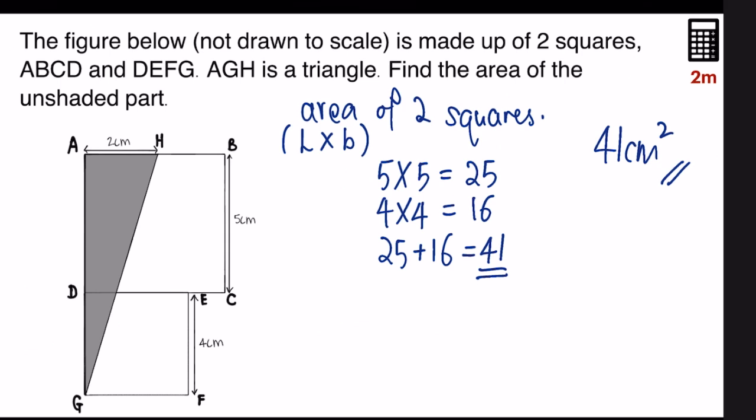Now back to the question. They want us to find the area of the unshaded part, which is right here. Since I have found the area of the two squares, I can simply take the area of the two squares and subtract the triangle and I'll get the unshaded part. But wait, how do we find the area of the triangle?